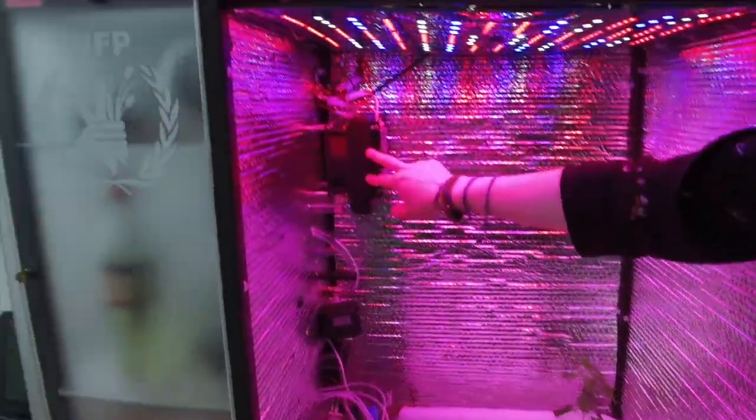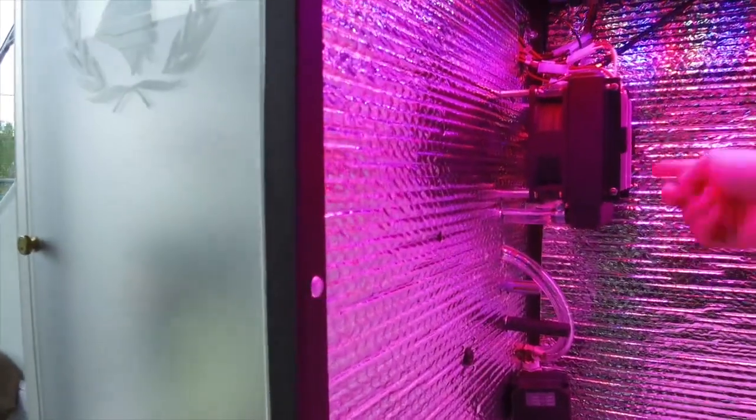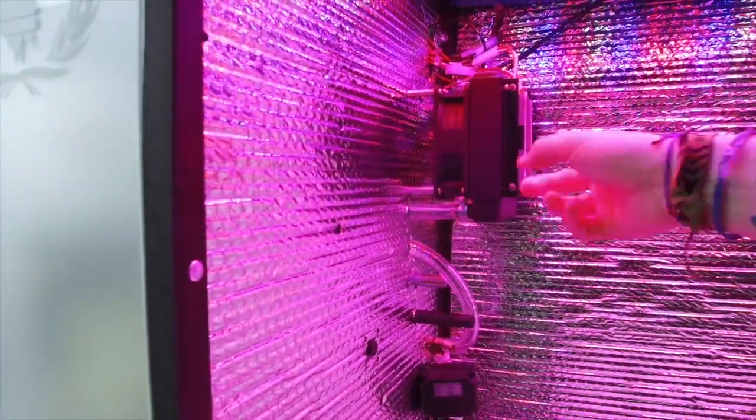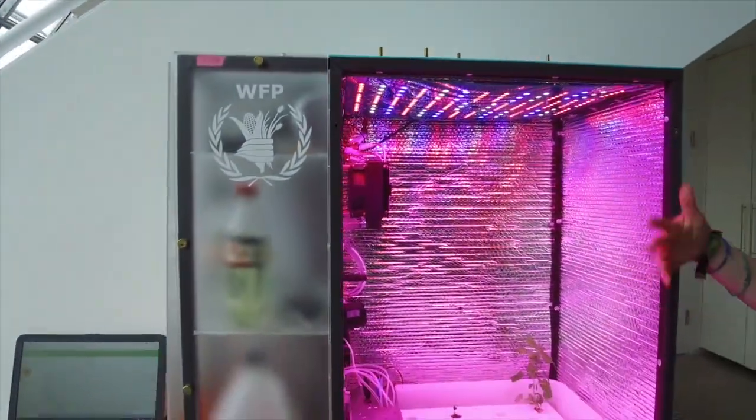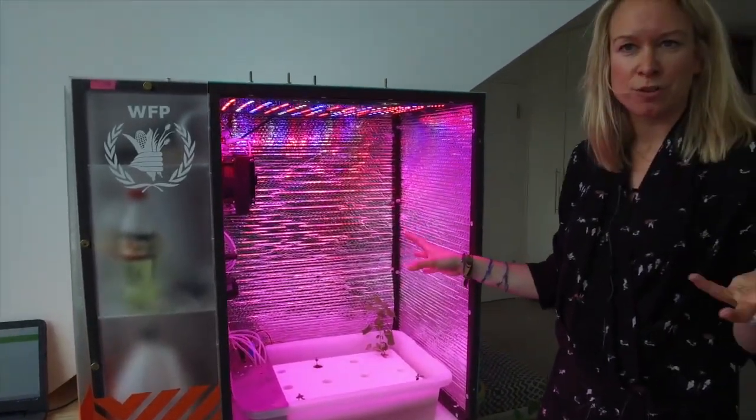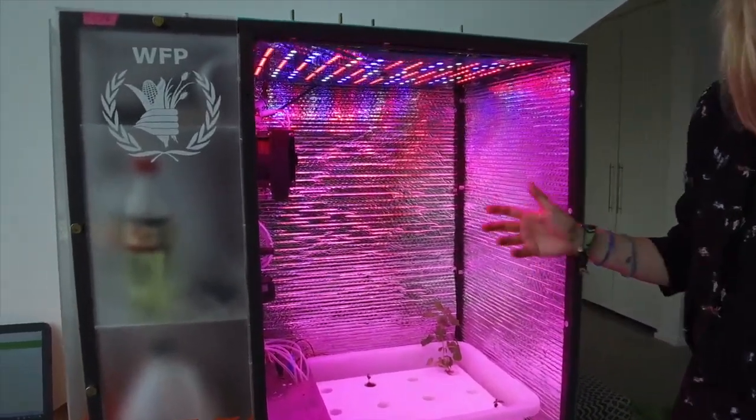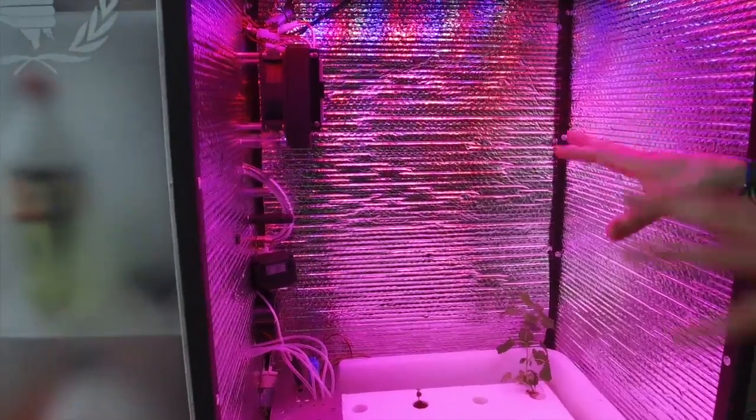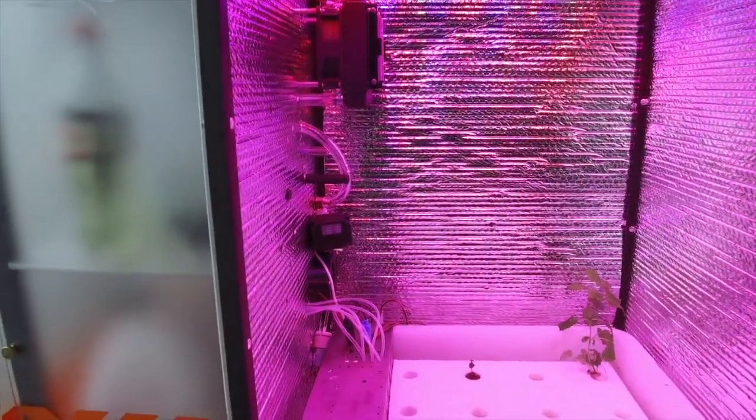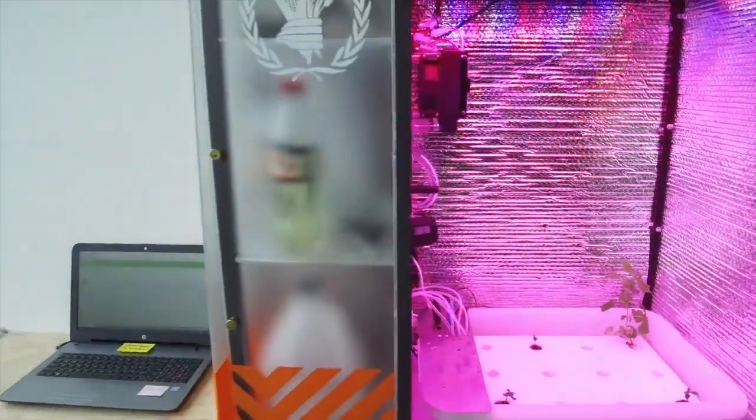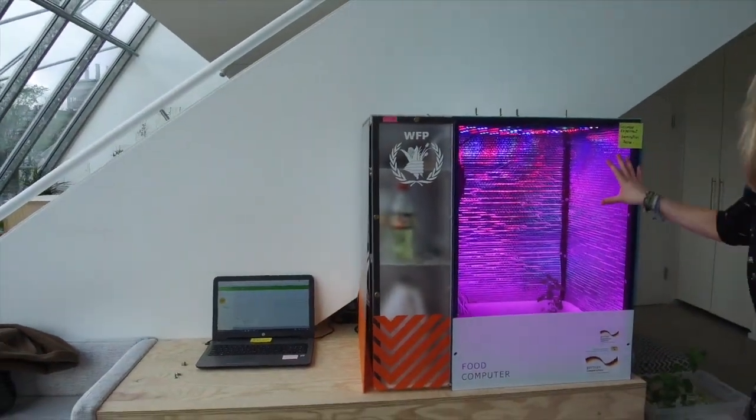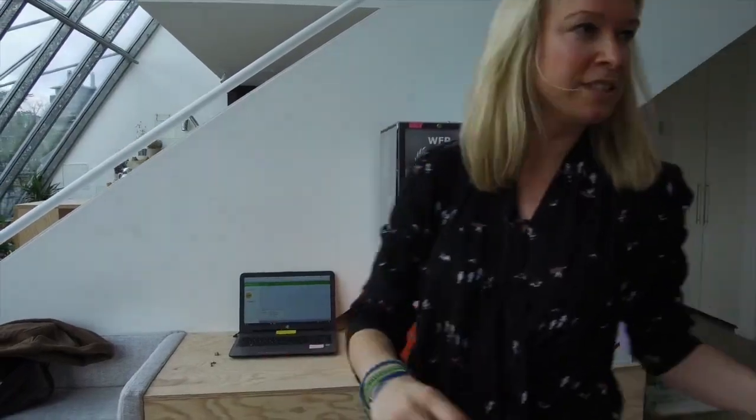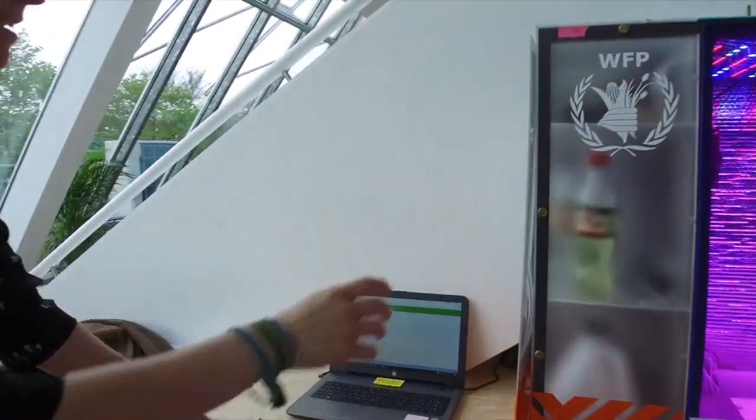This here regulates the temperature because it's actually a heater and an AC unit. So that way you could really control day and night and you could make it, for example if you would want to grow tomatoes to taste like in southern Italy you would just create the climate of Naples in here.